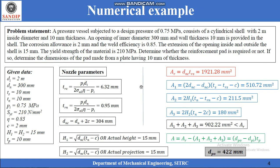Let us now solve a problem based on this method. The problem statement and given data are presented here for convenience. Various nozzle parameters must first be calculated from the given data, including the required thickness of the shell TRS, the required thickness of the nozzle TRN, and the diameter of the nozzle in corroded condition DNC. For the nozzle, these yield values of 6.32 mm, 0.95 mm, and 304 mm respectively.